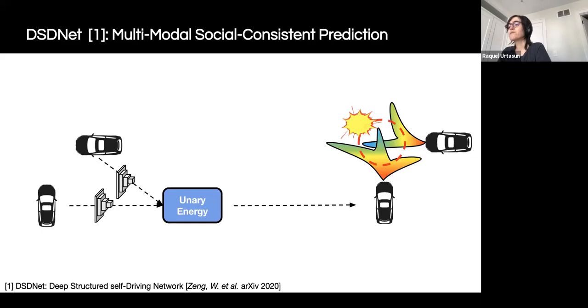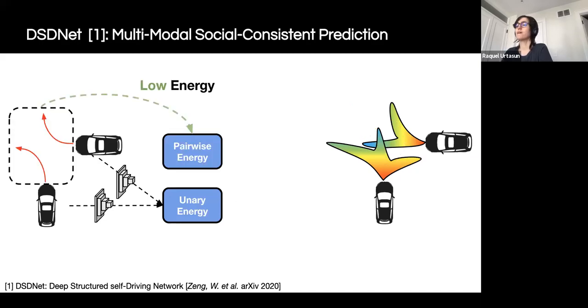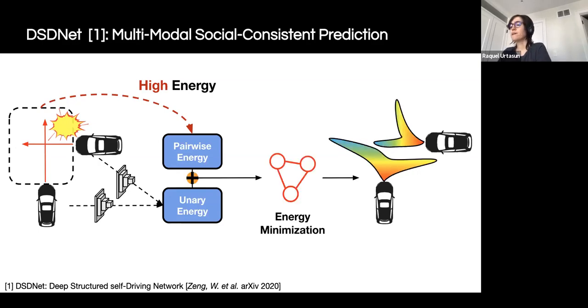However, the produced probabilities do not guarantee social consistency, as shown in the red circle, and it is hard to encode human knowledge such as avoiding collisions within our deep learning-based framework. Therefore, in order to model these interactions, we model each object as a node in a probabilistic graph, and have the edges encode our knowledge about their interactions, such as collision avoidance, yielding, etc. For example, for every pair of actors, we can evaluate a pairwise energy. In this case, since the actor's actions are socially consistent, we have a low pairwise energy. In contrast, here we have high pairwise energy since the actors collide. Then we conduct an inference process using loopy belief propagation, so that high energy inconsistent scenarios have a very low probability.